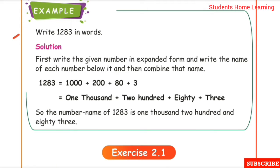Example: Write 1283 in words. Solution: First write the given number in expanded form and write the name of each number below it and then combine that name. For this number, we need to write the expanded form by using place values.